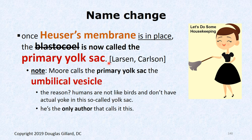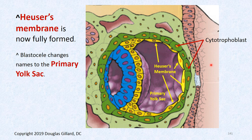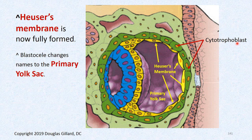So we've formed Heuser's membrane and converted the old blastocele into the primary yolk sac. Also, the trophoblast layer changed names: once the syncytiotrophoblast was produced, that original trophoblast layer was renamed cytotrophoblast.